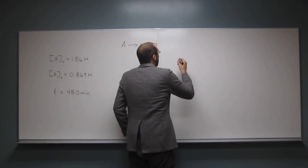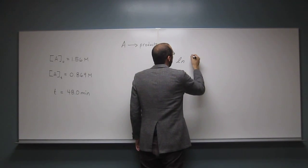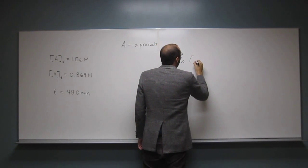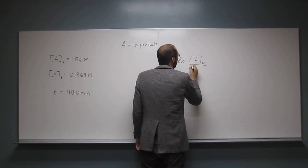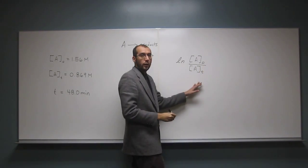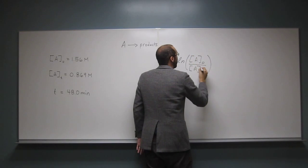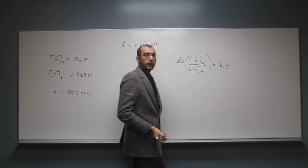Recall, make sure you can recall it. It's the ln, the natural log of the concentration of A initially divided by the concentration of A at time T. And that equals the rate constant times the time.